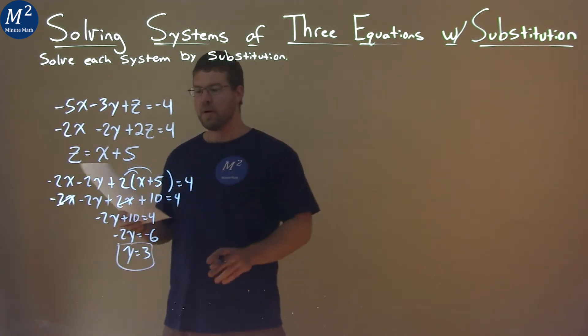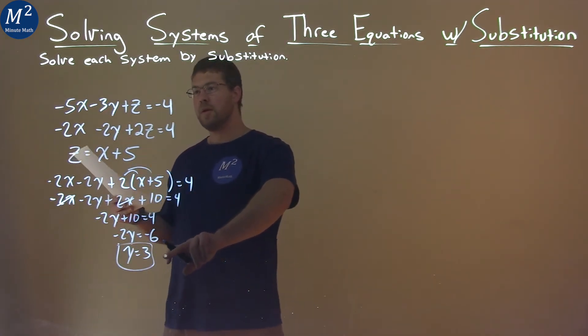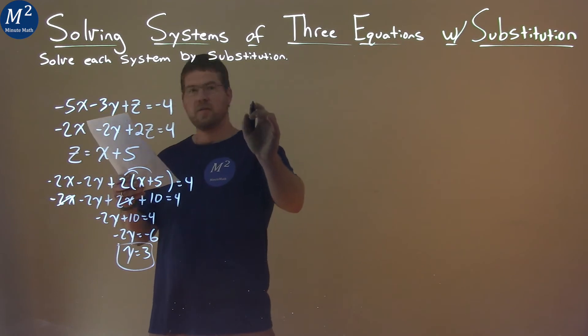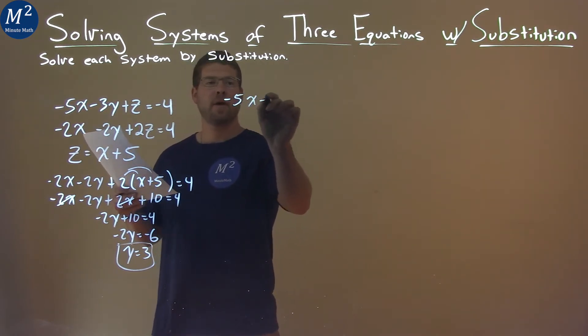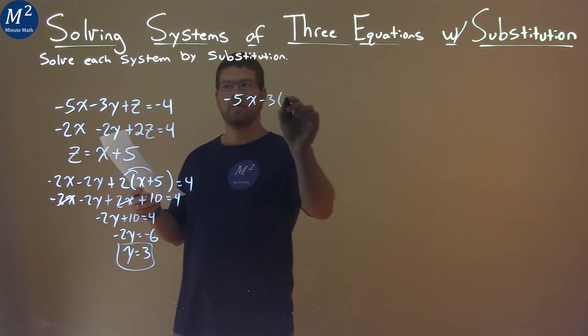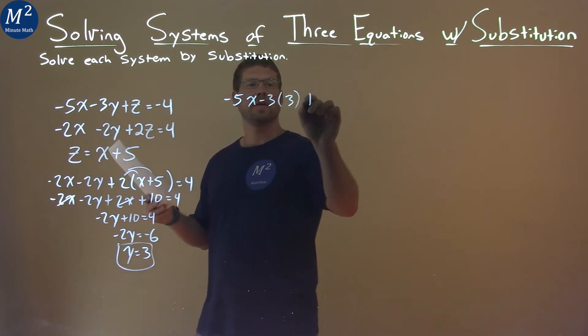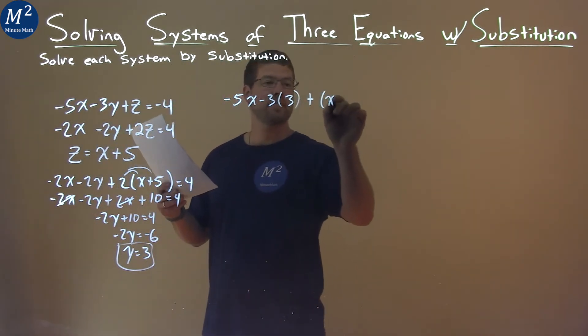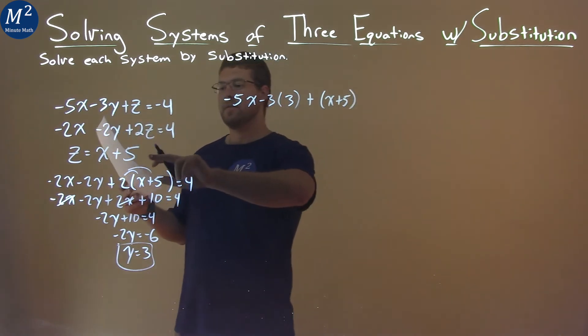Then, from there, we have y equals positive 3. Let's look at our first equation, and let's put that y equals 3 in for this y right here. So, we have negative 5x minus 3 times a positive 3, and now watch this. Instead of z, we put the third equation in, x plus 5, and keep going, equals negative 4.